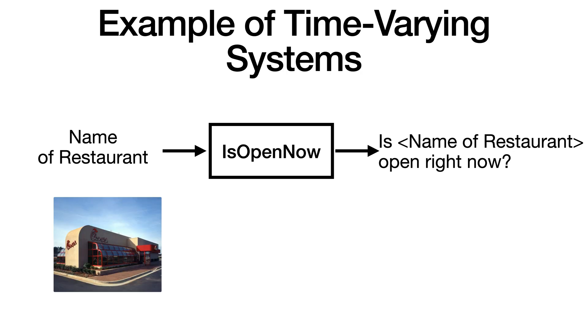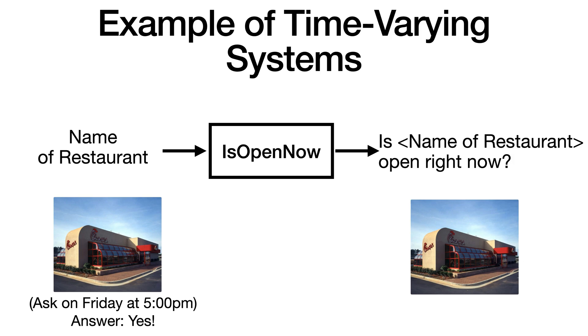So here's an example. Suppose I put in Chick-fil-A and I ask on Friday at 5pm, is Chick-fil-A open? And the answer is yes, the system will return yes, but if I ask this question at Sunday at 5pm, the answer will be no.